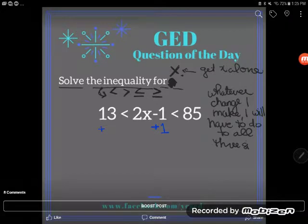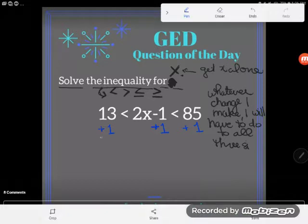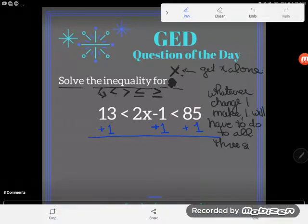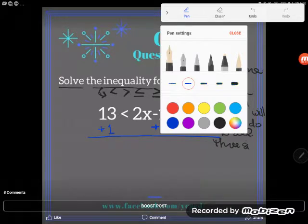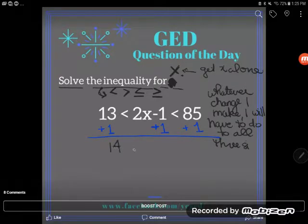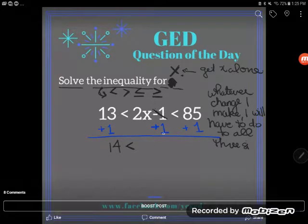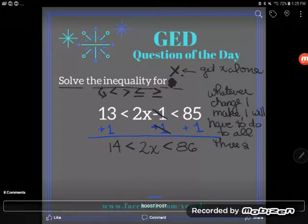And one to the right-hand side. We're going to have to add one to all three expressions, so that the three expressions will stay in the same relationship that they've always been in. So, 13 plus 1 is 14. Then I'll keep my inequality symbol the same. Then subtracting one and adding one are opposites, so they cancel out. So, all that's left in the middle is 2x. And then 85 plus 1 is 86. Great. I'm almost done.